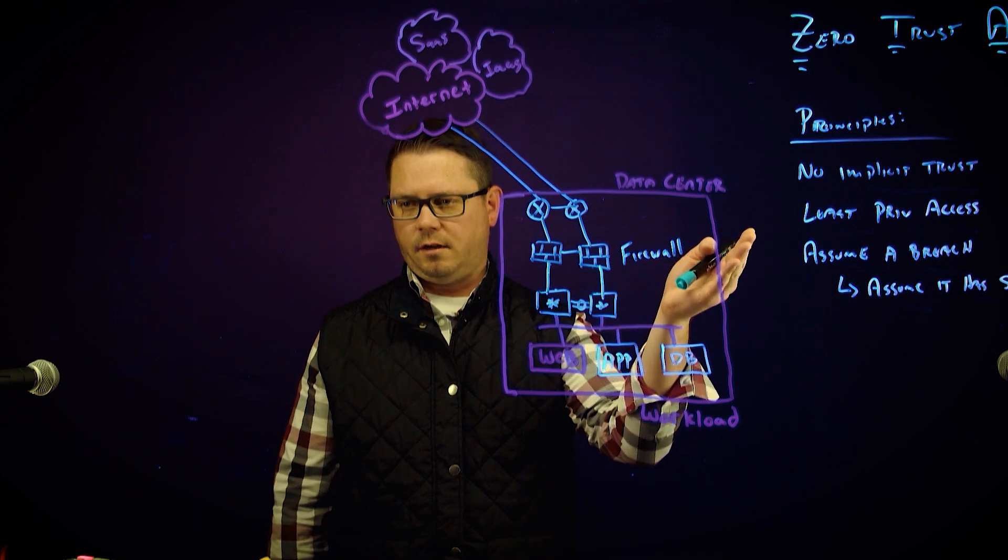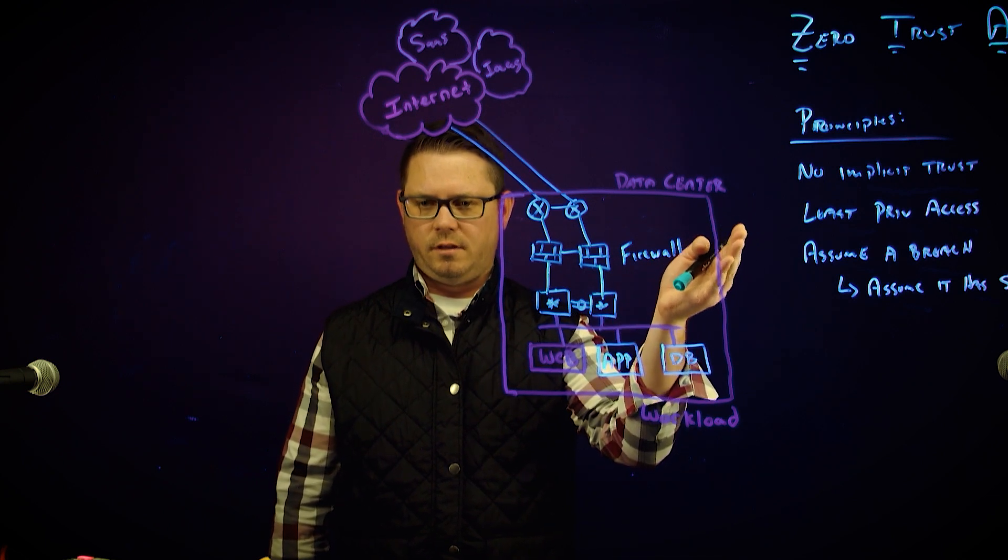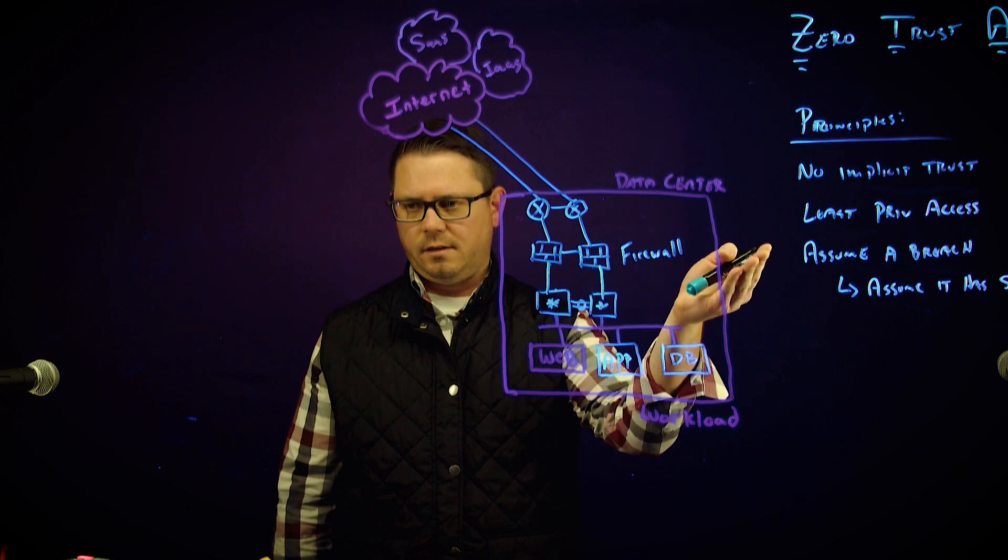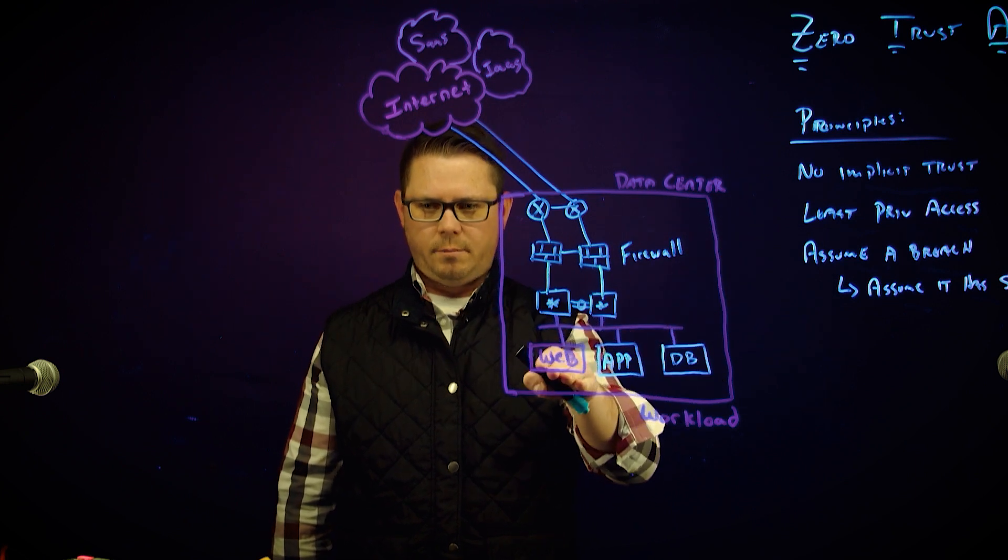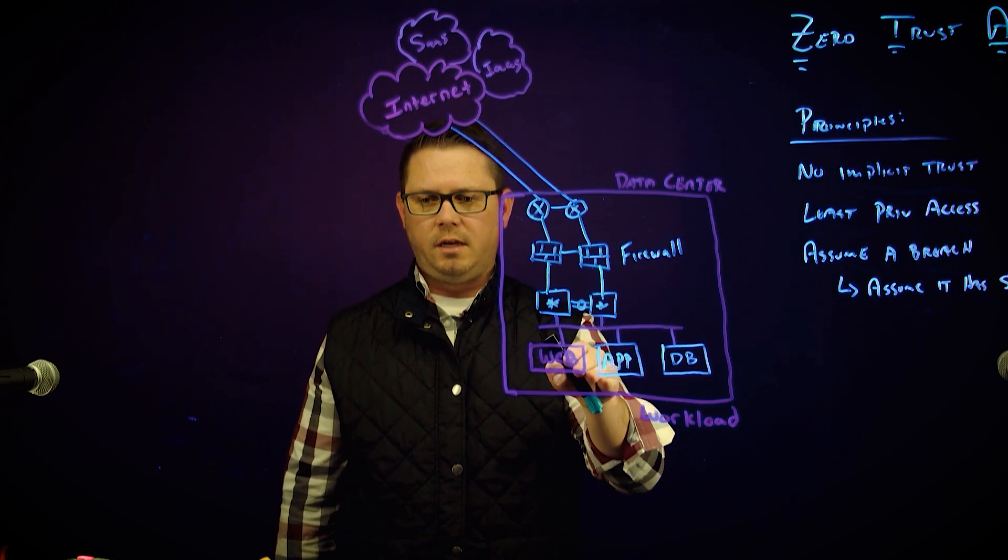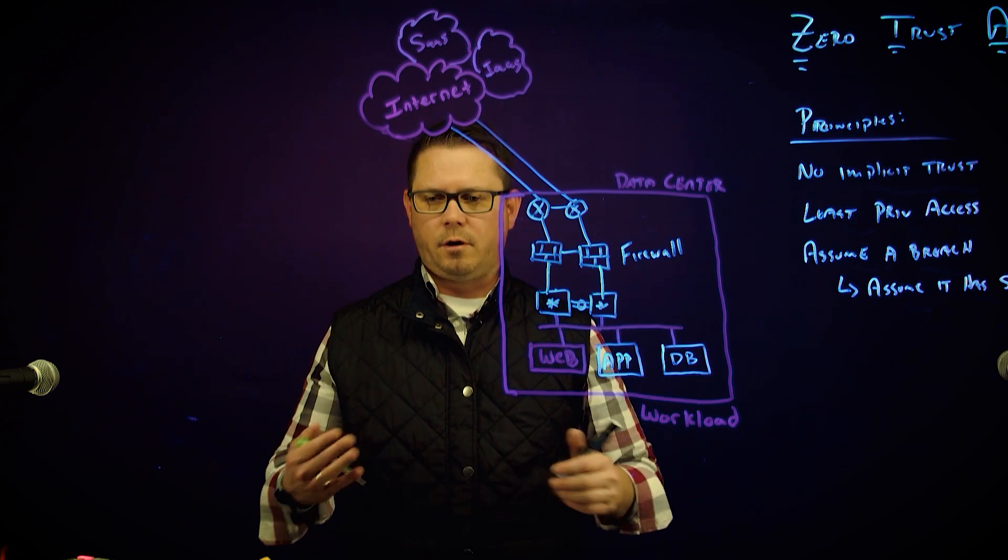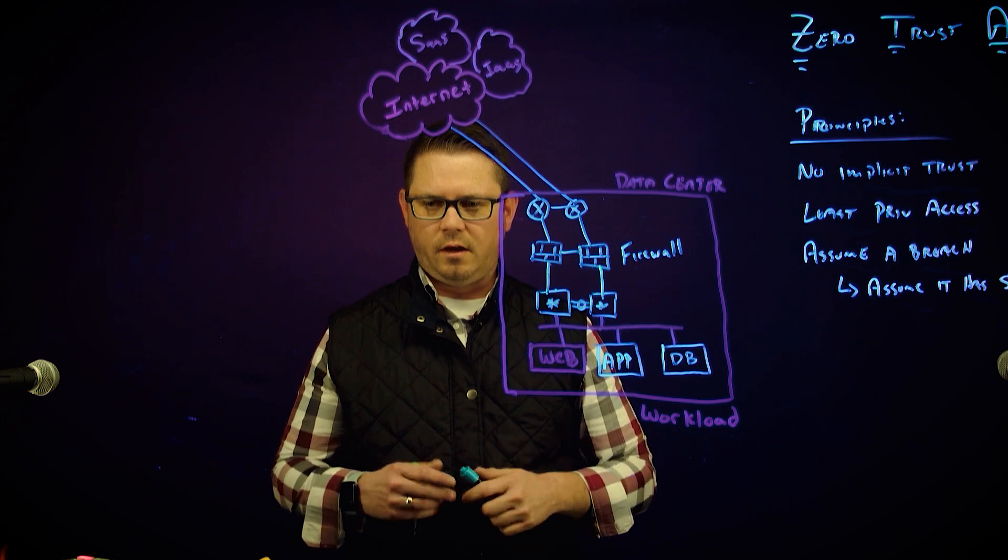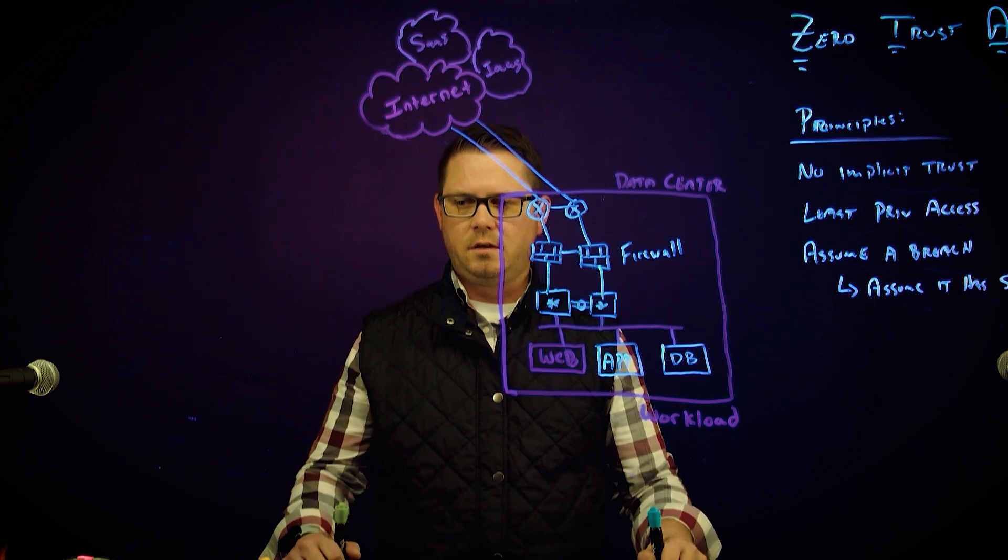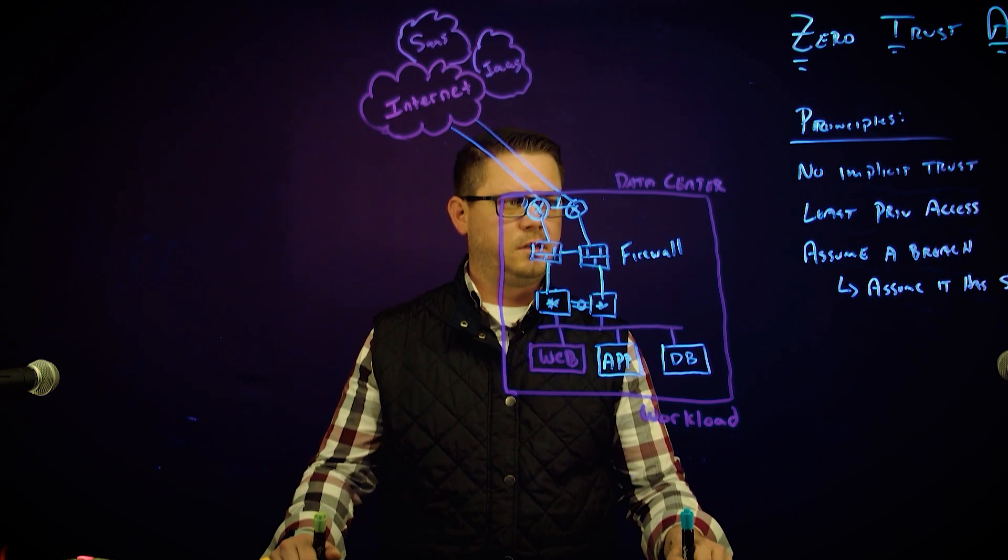When we start leveraging micro-segmentation tools within the data center, we can align to least privilege access, where the web tier and the app tier maybe only need to talk to each other, but the web tier never talks to the database tier. And we can start performing that least privilege access via applying Zero Trust network access policies and architecture within the data center.